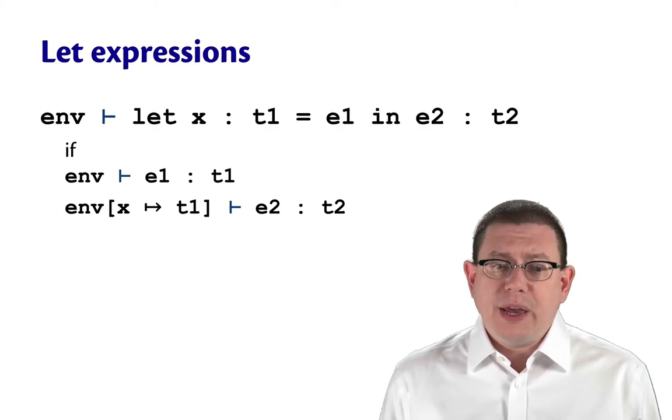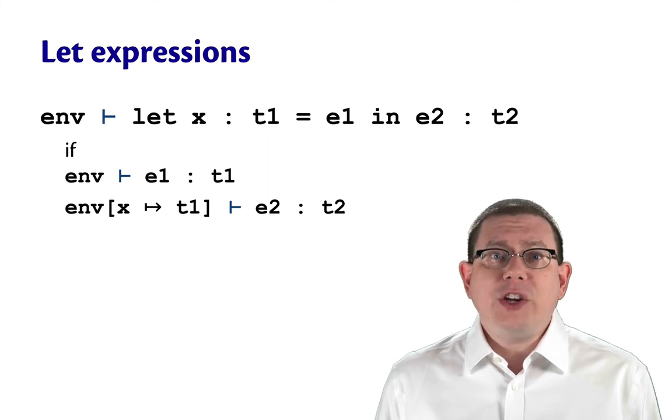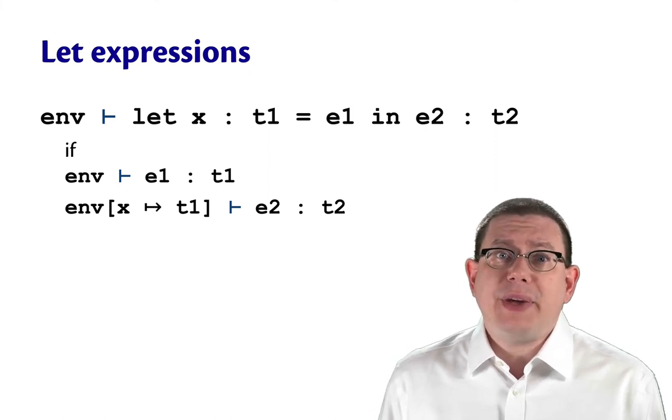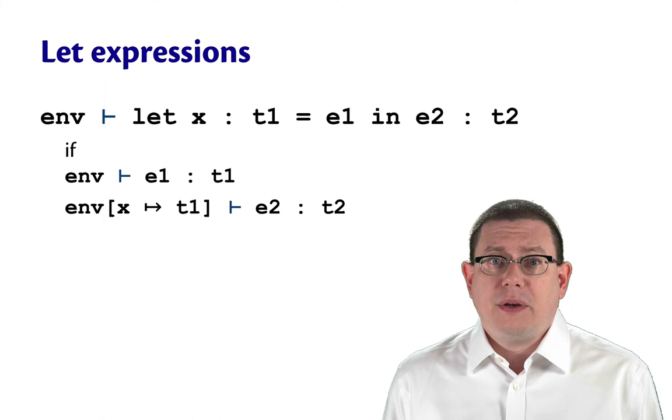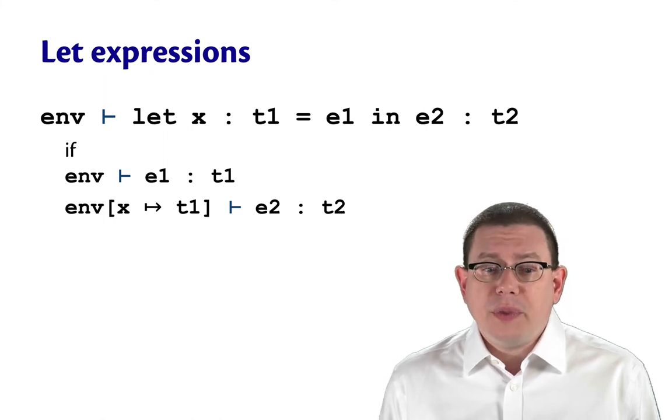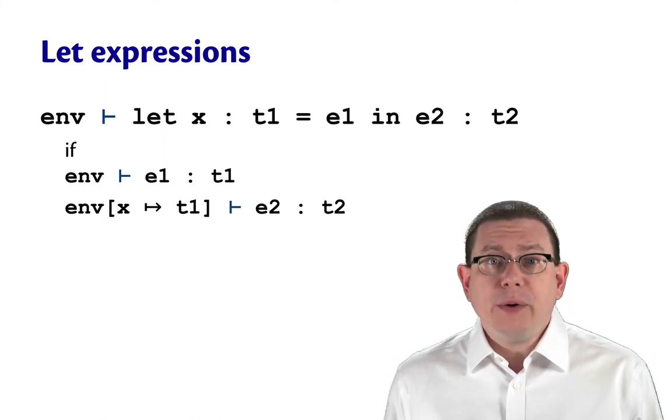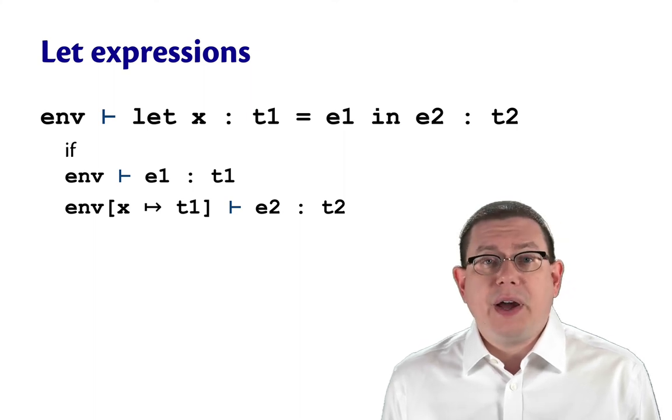So notice there's a strong similarity here between the type checking rule for let and the evaluation rule for let in the big step environment semantics. In both of them, we extend the environment to record information about the identifier.